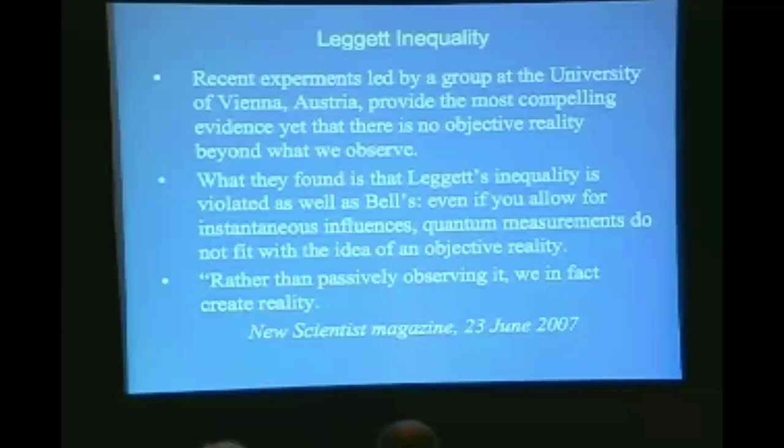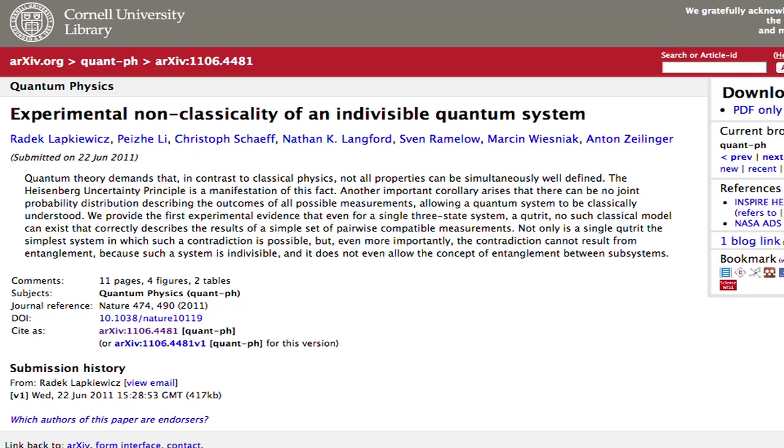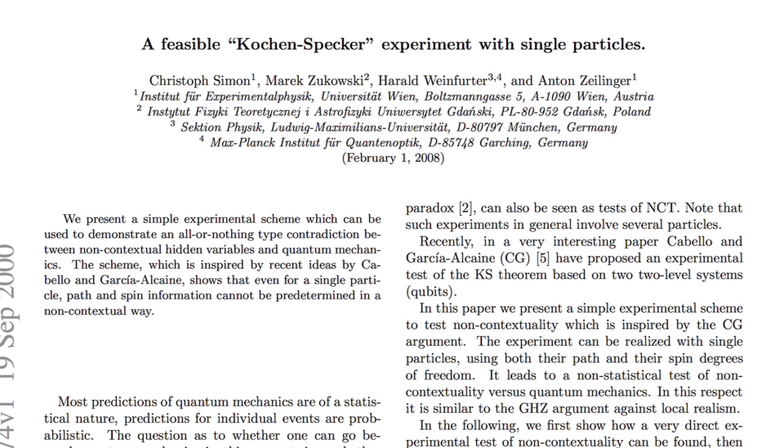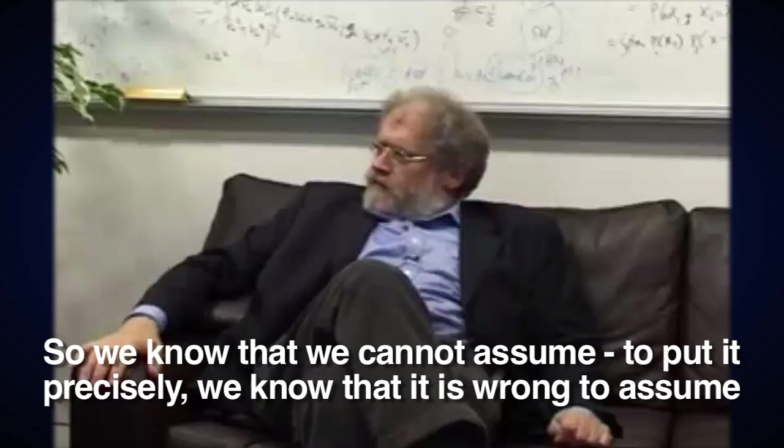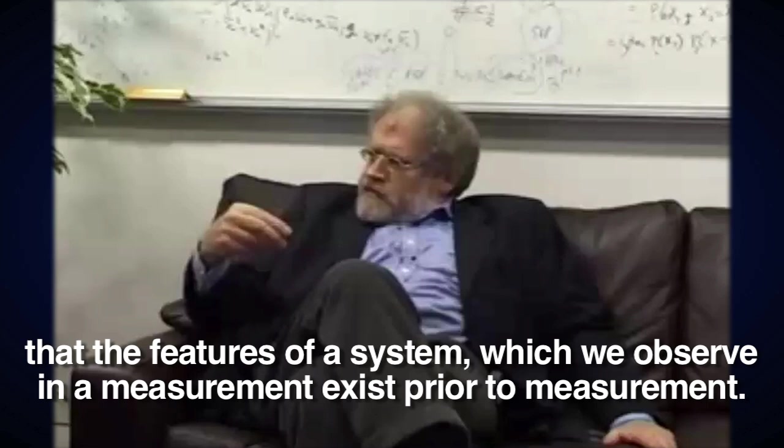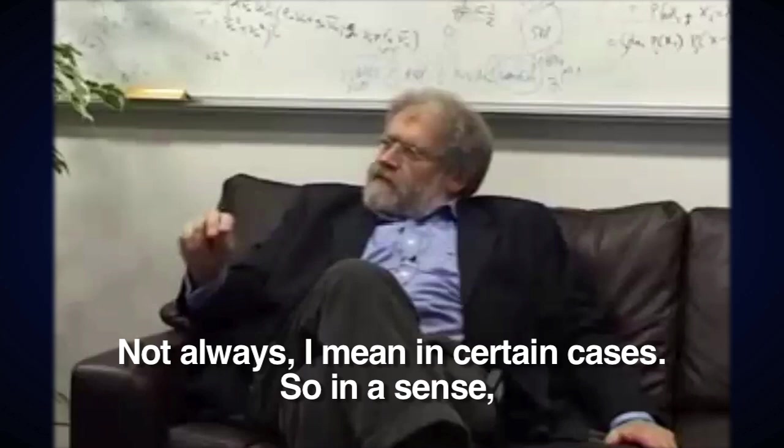And then on top of this, the Kochen-Specker theorem was experimentally confirmed in 2011. The philosophical implications also support the notion that physical reality is not there without an observer, as Anton Zeilinger explains. The Kochen-Specker theorem talks about properties of one system only. So we know that we cannot assume, to put it precisely, we know that it is wrong to assume that the features of a system which we observe in the measurement exist prior to the measurement. Not always, I mean in certain cases. So in a sense, what we perceive as reality now depends on our earlier decision what to measure.